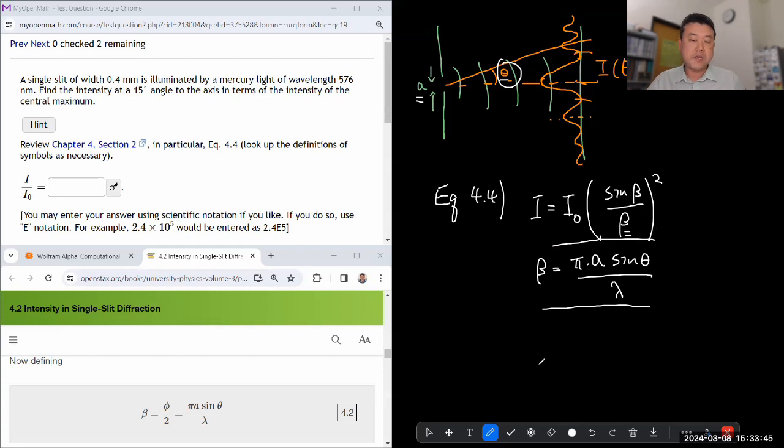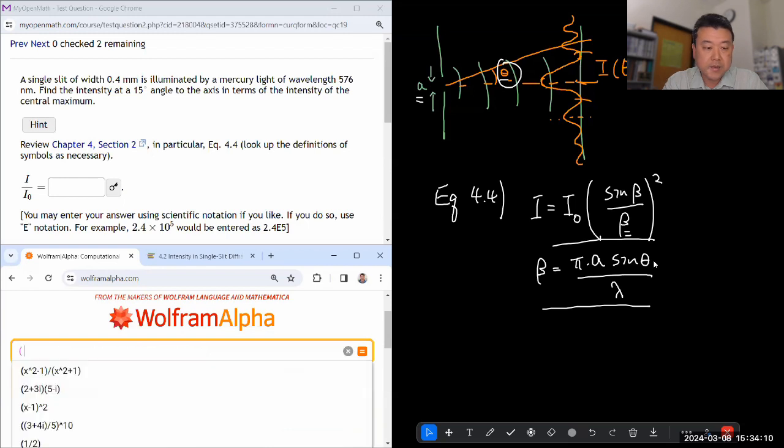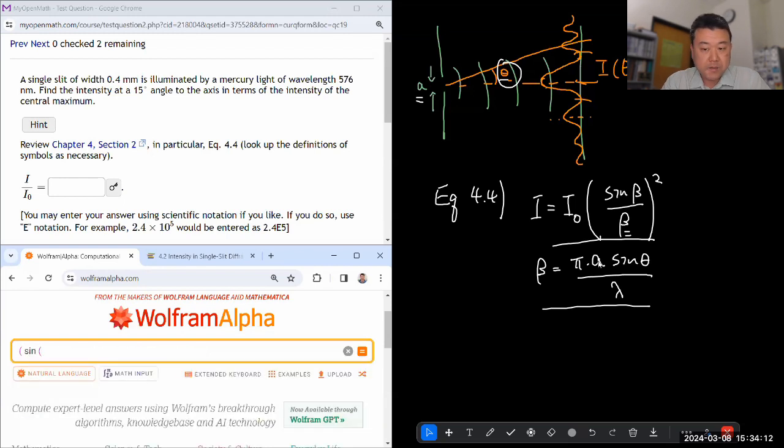So I got these formulas, I can plug in numbers. And let me simulate an issue that you are going to get, or you may get, when you try to do this calculation in your calculator. So let's suppose I'm trying to do this calculation in my calculator, I might plug in something like this, I just say, so I'm dividing by I naught. So I don't have to worry about that. I'm just calculating this. So I just say, sine of beta, and let me write out what beta is.